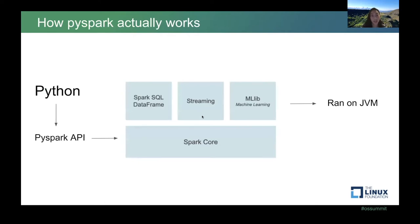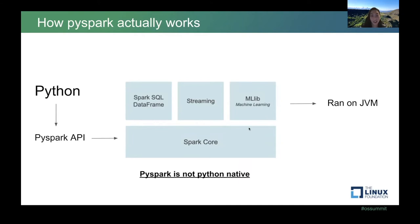I mostly work with PySpark, which allows you to write Spark applications using Python APIs. PySpark supports most of Spark's features such as Spark SQL, DataFrame, Streaming, MLlib, and SparkCore. Spark is written in Scala and its source code compiles to Java bytecode to run on the JVM. So the main takeaway is that when running PySpark code, it's actually not Python native — it's just an API to run Scala code on the JVM.